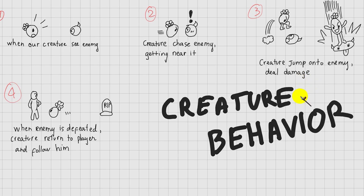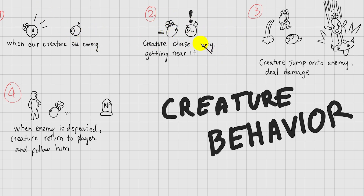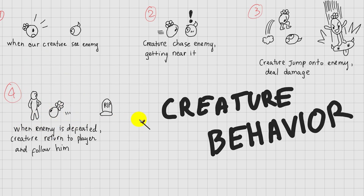Hello everyone. In this tutorial, I'm going to show you how to create creature behavior. Firstly, we create a detection — that means when our creature sees an enemy, it will chase that enemy. Then, when in range, our creature will jump onto that enemy, dealing damage. Then after that enemy is defeated, our creature will simply return to the player and follow the player.